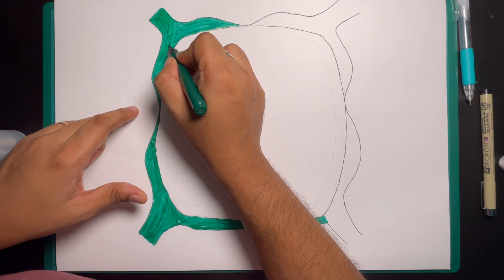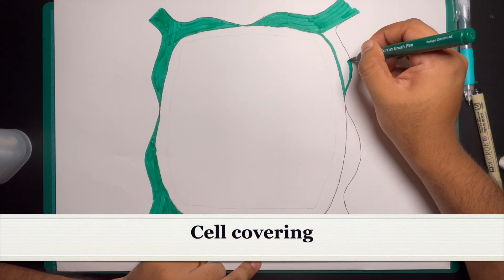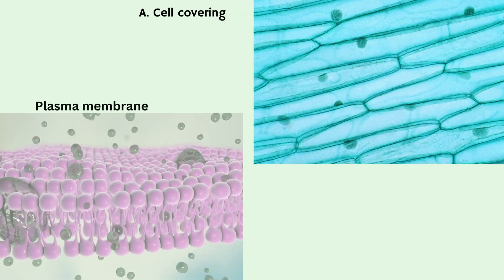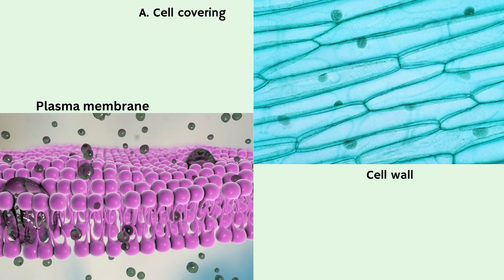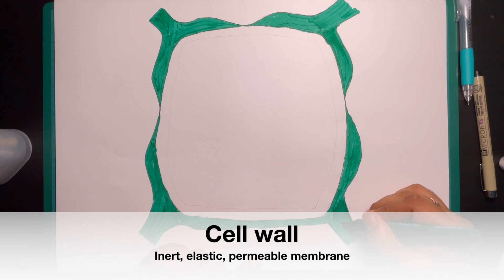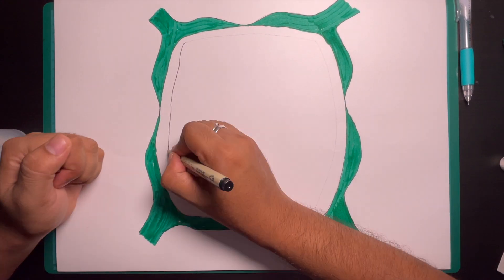Now let us learn about the cell covering. The cell covering of plant is made up of plasma membrane and cell wall. The cell wall is a cellulose formed inert elastic and permeable membrane. It is located outside the cell membrane.